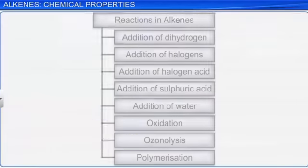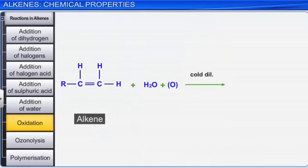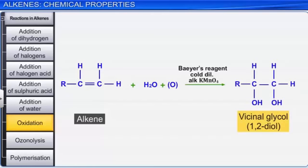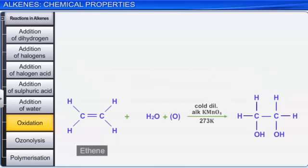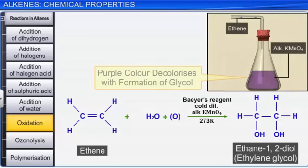Let us now look at the oxidation reactions of alkenes. Alkenes, on reacting with cold dilute aqueous solution of potassium permanganate (also called Baeyer's reagent), produce vicinal glycols, that is, 1,2-diols. For example, ethene on reaction with Baeyer's reagent forms ethane-1,2-diol or ethylene glycol. As the purple color of potassium permanganate decolorizes with the formation of glycol, this reaction is used as a test for unsaturation.